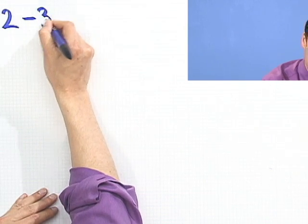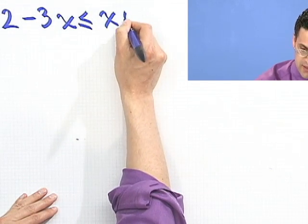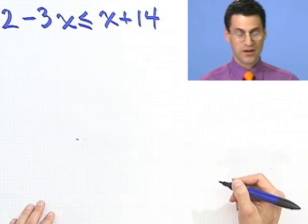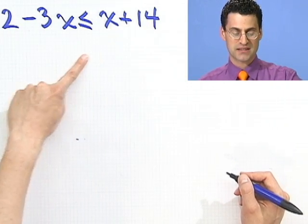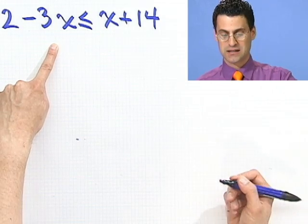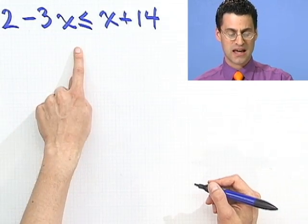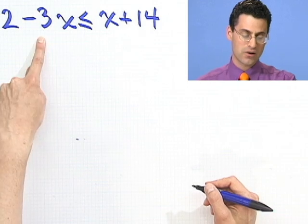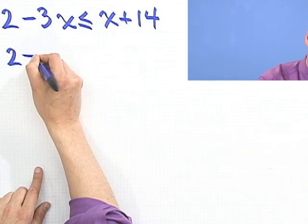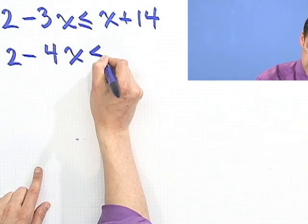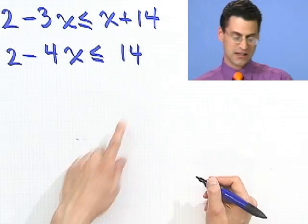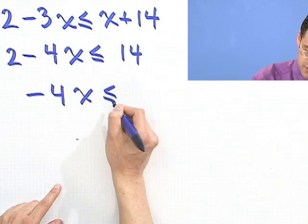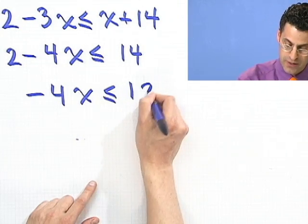Suppose that I tell you that I have 2 minus 3x, and that's less than or equal to x plus 14. Now I want to solve this. So how would I do that? Let me bring this x over to that side. So now I'm going to subtract it. And I'm going to try to do this without writing in minus x equals minus x. If I subtract it over, the sign doesn't change, but I see a minus 4x less than or equal to 14. If I bring this 2 over, I have to subtract it. It doesn't change the inequality. So I now see, if I bring this over, I'll see a 12.